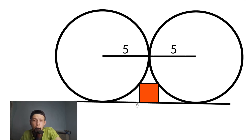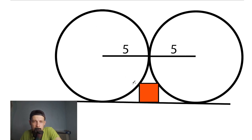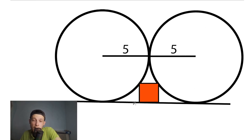Hello everyone, happy to see you here, welcome back to my channel. Today we have a really interesting question: we need to find the area of this red square. We know that there is a circle on the left side with radius 5, and the same circle on the right side with radius 5. We need to find the area of this red square quickly and step by step.